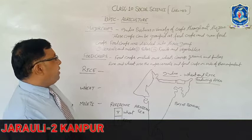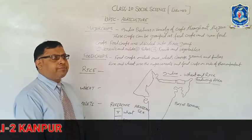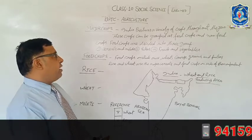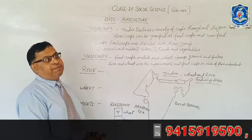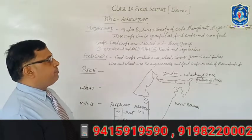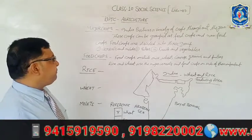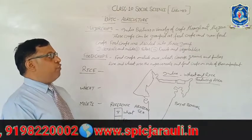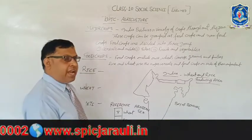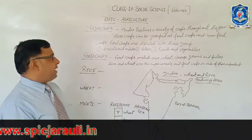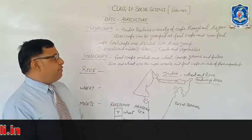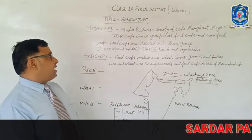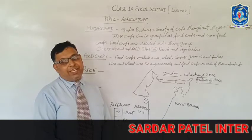India produces a variety of crops throughout the year. These crops can be grouped as food crops and non-food crops. Food crops are divided into three groups: cereals and millets, pulses, and fruits and vegetables.